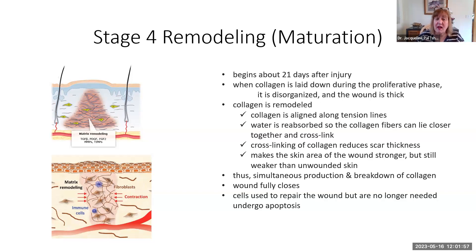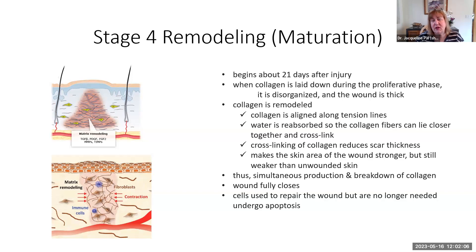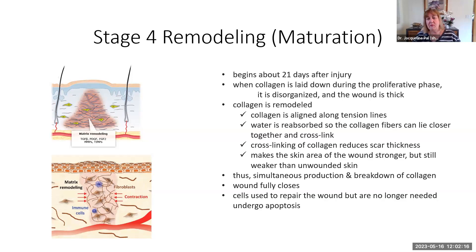There is still a lot more remodeling going on besides just the wound being completely closed. Cells that we no longer need - such as macrophages and the fibroblasts that were laying down collagen - those cells are going to undergo apoptosis, that programmed cellular death process we've talked about earlier.